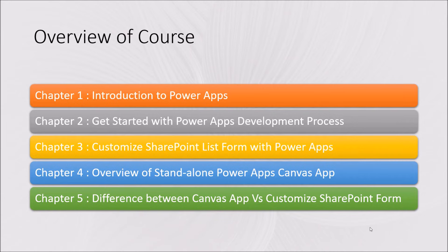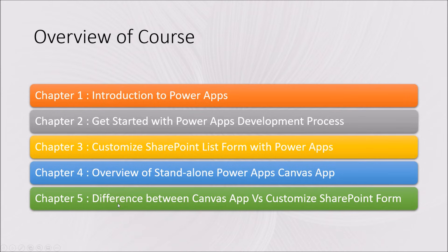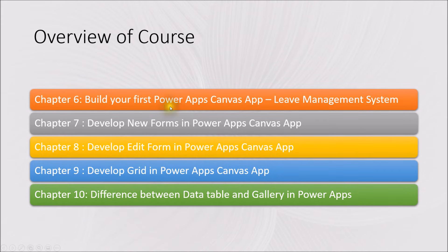Now let me give you an overview of this course — the 20 chapters and what we are going to cover. First, we will get started with the introduction of PowerApps, then move to the PowerApps development process. After that, we will start customizing the SharePoint list form with PowerApps, then talk about standalone PowerApps Canvas app, and the difference between Canvas app versus customized SharePoint form app. During chapter 6, we will build our first PowerApps Canvas app with a real life example: a Live Management System.